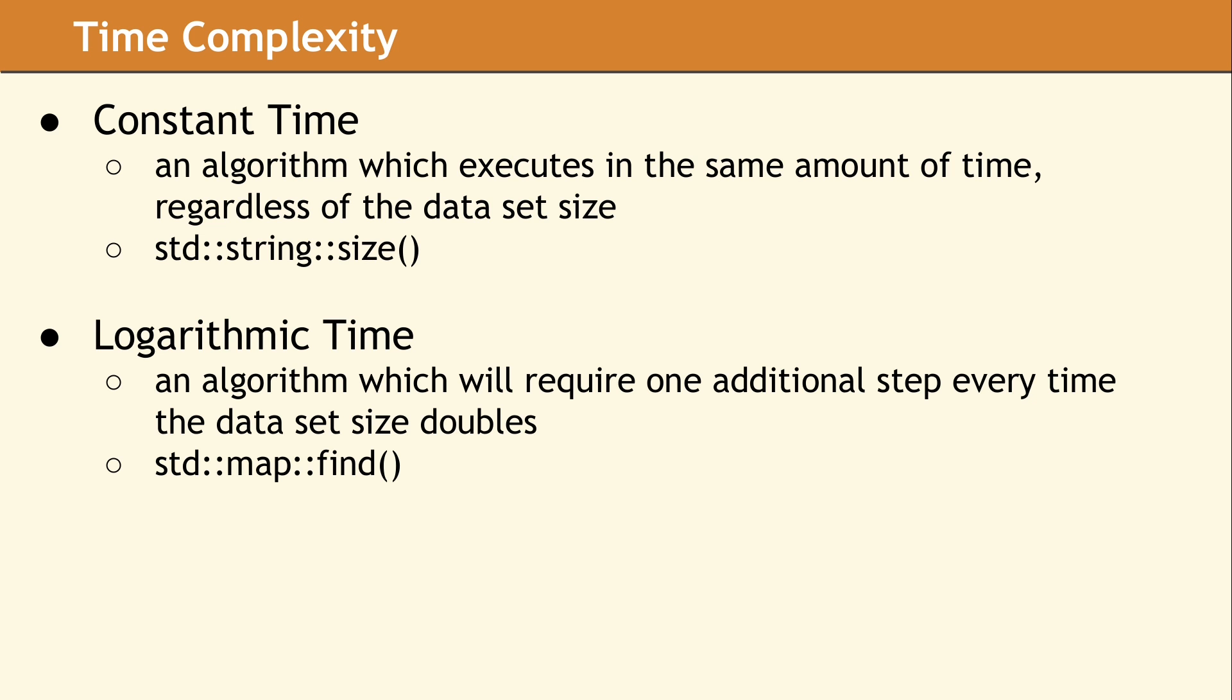We want to look a bit deeper into a few of the O notations. Constant time is the most desirable time complexity an algorithm can have. An example of a constant time algorithm is querying the current size of an STD string. The size of the string is stored as a data member of the string object. The time to read and return the value of a single data member is not dependent on the size of the container.